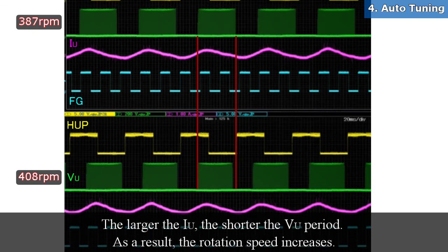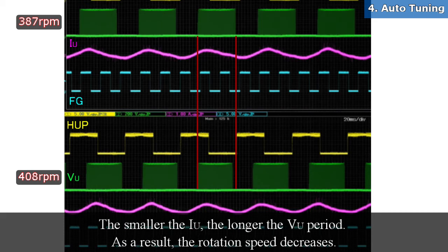The larger the IU, the shorter the VU period. As a result, the rotation speed increases. The smaller the IU, the longer the VU period. As a result, the rotation speed decreases.